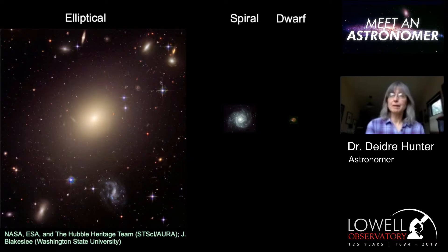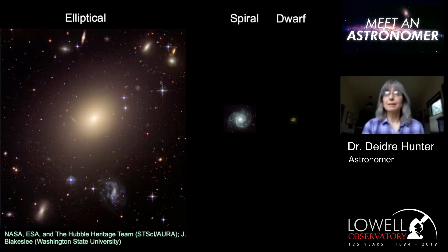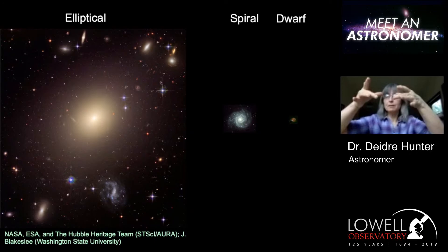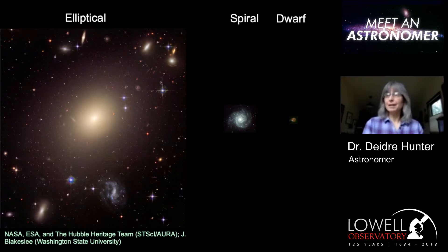The elliptical galaxies, shown over here on the left, are very large generally, and they are triaxial in shape — sort of shaped like a hard-boiled egg. The spiral galaxies and the dwarf galaxies are disk galaxies, so if you look at them face on they're round, but edge on they are a thin disk. The spiral galaxies are very beautiful because of their spiral pattern — kind of like fried eggs, because they're thin, with the yolk or the nucleus in the center. And the dwarf irregular galaxies are the scrambled eggs of this egg sequence.